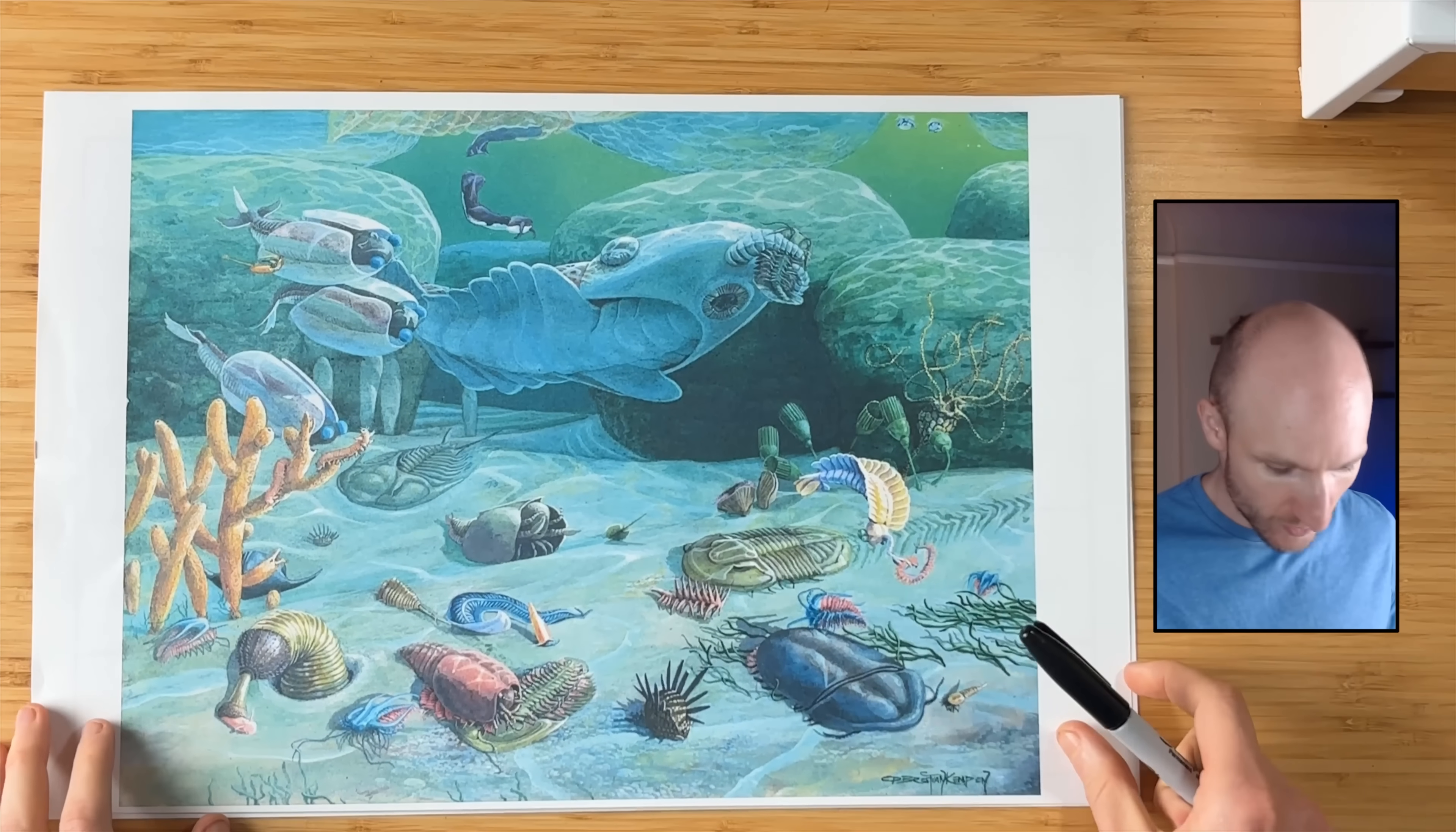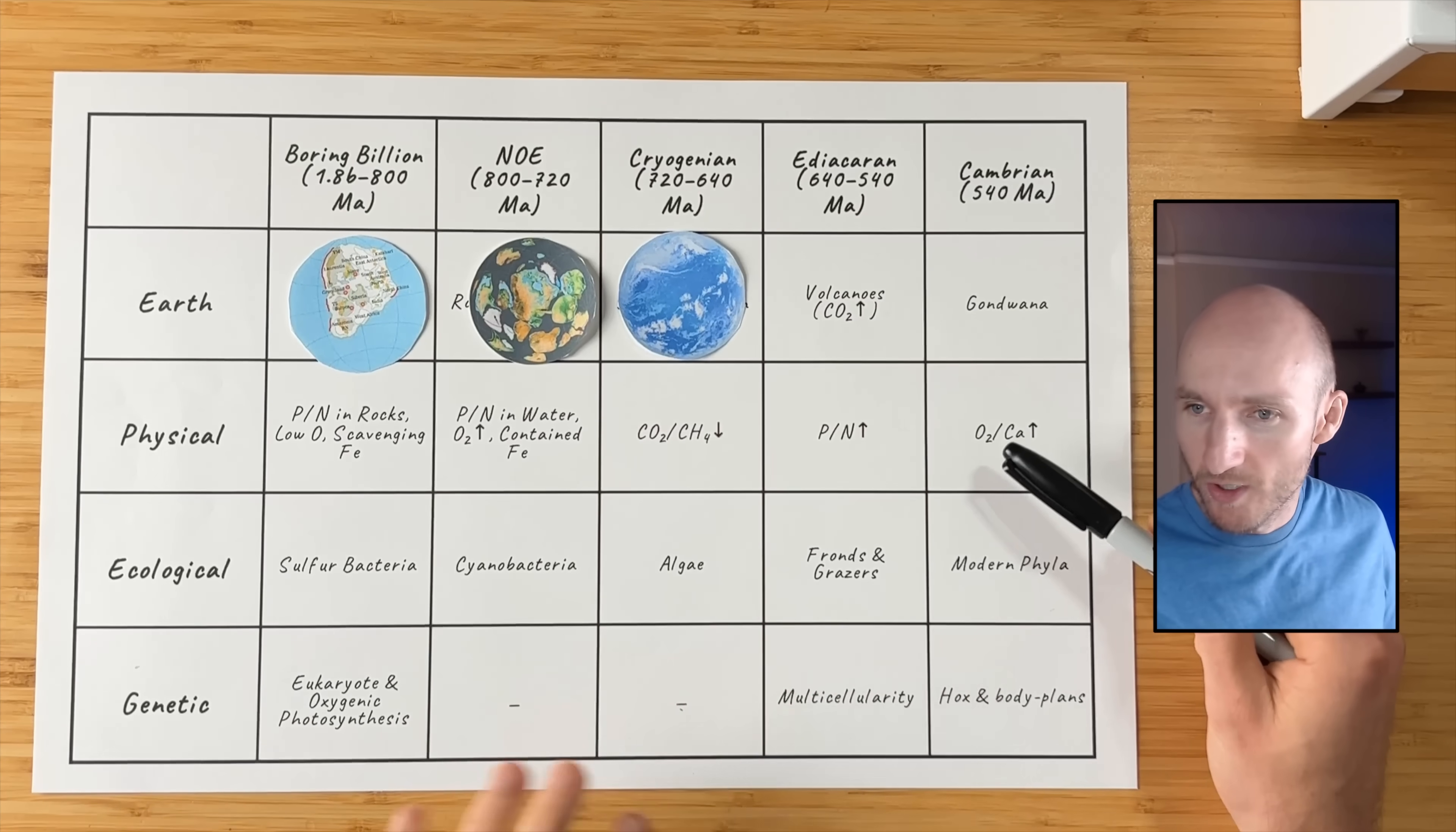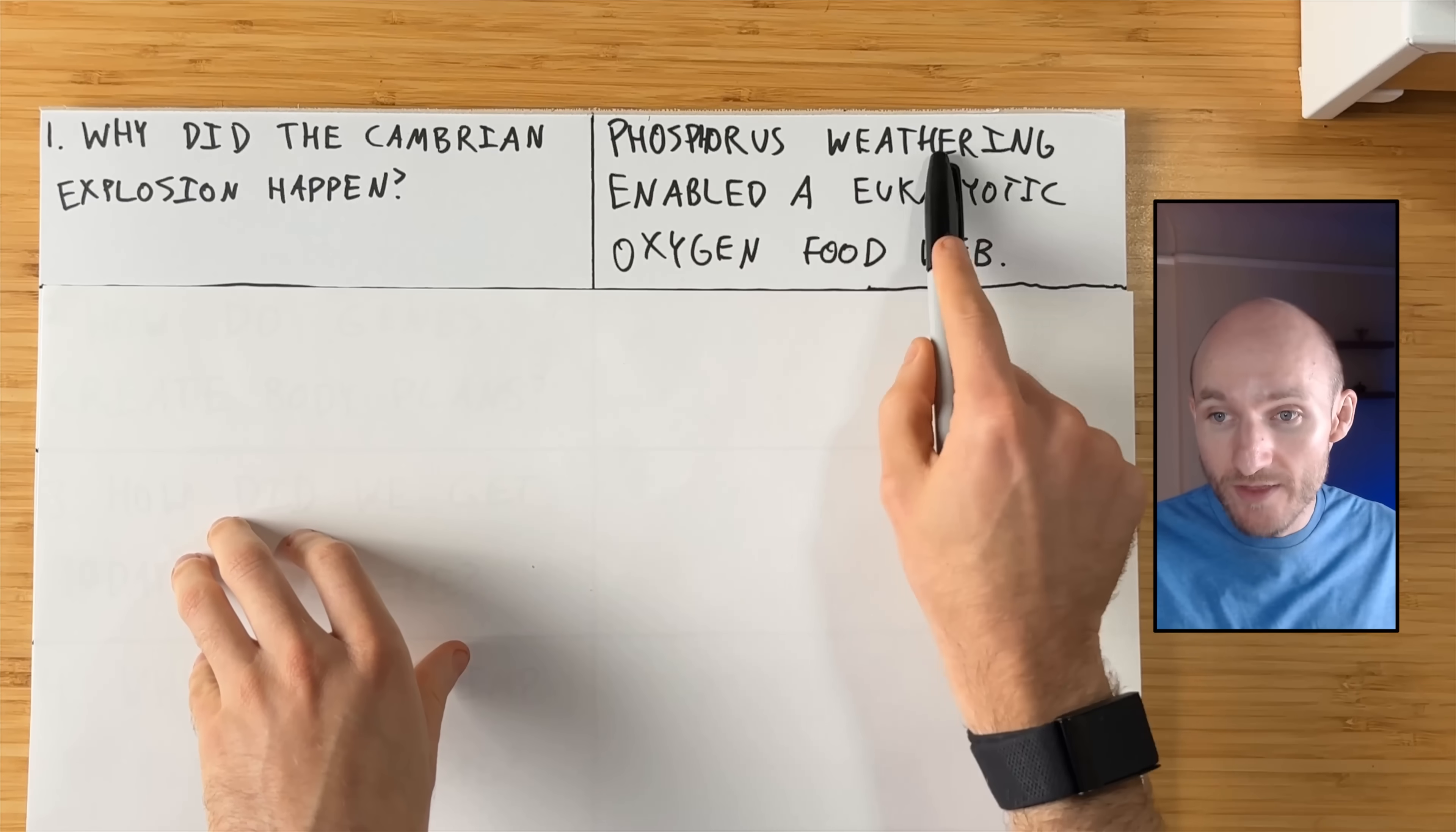But then finally to make the Cambrian, you don't just have fronds and grazers here. You also have some of these animals that need even more oxygen to move around and also have shells. And so that's when you get this new supercontinent, Gondwana, with a bunch more oxygen into the world. We finally have a world full of 20% atmospheric oxygen, calcium levels have also increased a bunch, and we have the modern phyla emerge. So why did the Cambrian explosion happen? Well, it happened because phosphorus weathering enabled a eukaryotic oxygen food web. Thank you as always for watching, and thank you to Roots donors for supporting this channel. If you want to understand more about the past and how we got here, check out the previous videos here. And if you want to understand the future and where we're going, feel free to subscribe here. Hope to see you then. Bye.